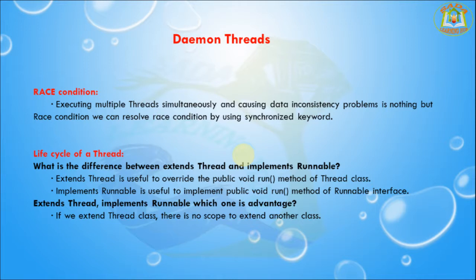Now, what is the difference between extends Thread and implements Runnable? Extends Thread is useful to override the public void run() method of the Thread class, while implements Runnable is useful to implement the public void run() method of the Runnable interface. Implements Runnable is recommended because if we extend the Thread class, there is no scope to extend any other class.